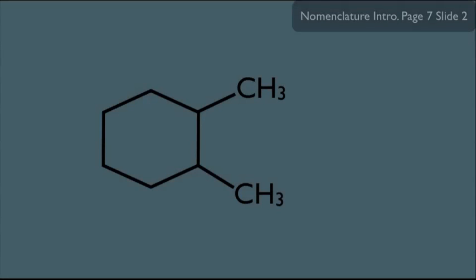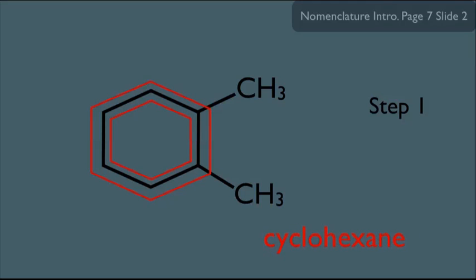In this online lecture, we're going to talk about the nomenclature of cyclic alkanes, and we're going to see it doesn't differ very much from the IUPAC system that we've been using for non-cyclical alkanes. So let's start with step one: we find the longest chain of carbons that make up a ring. For this particular molecule, that ring has six carbons, so the parent name is cyclohexane — hex for six, -ane ending for alkane, and cyclo because it's a ring.